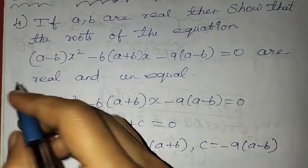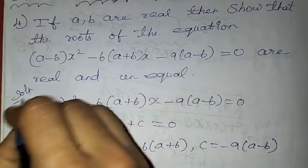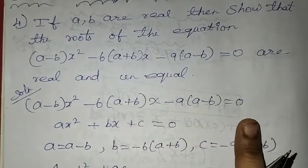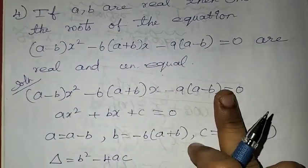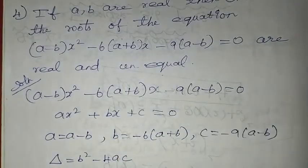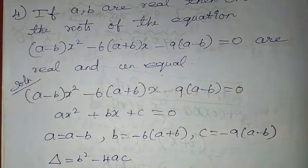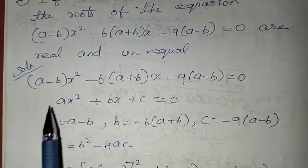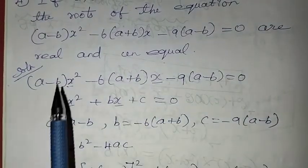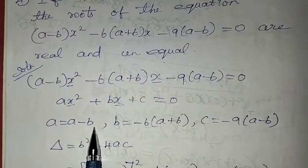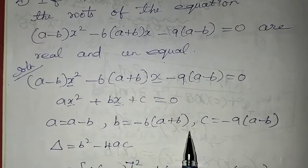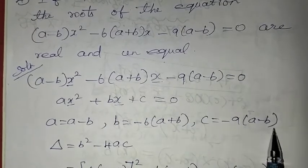First of all, the equation is (a minus b) into x square minus 6 into (a plus b) into x minus 9 into (a minus b) equal to 0. So, here a is (a minus b), b is minus 6 into (a plus b), and c is minus 9 into (a minus b).